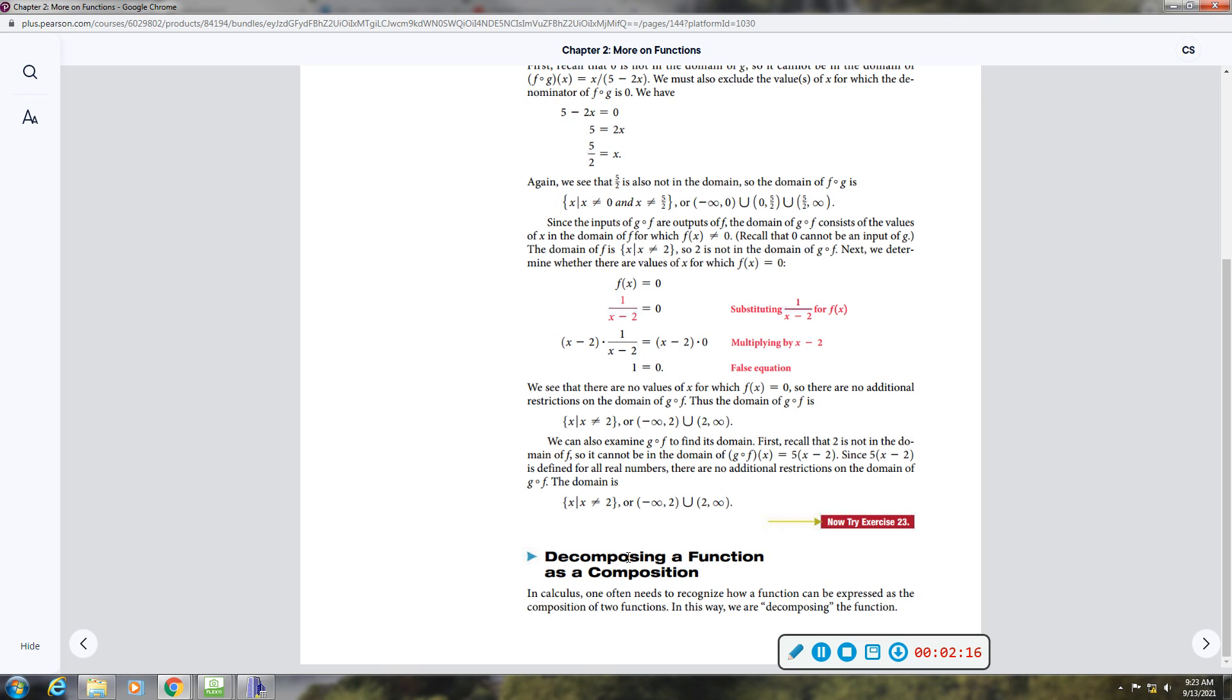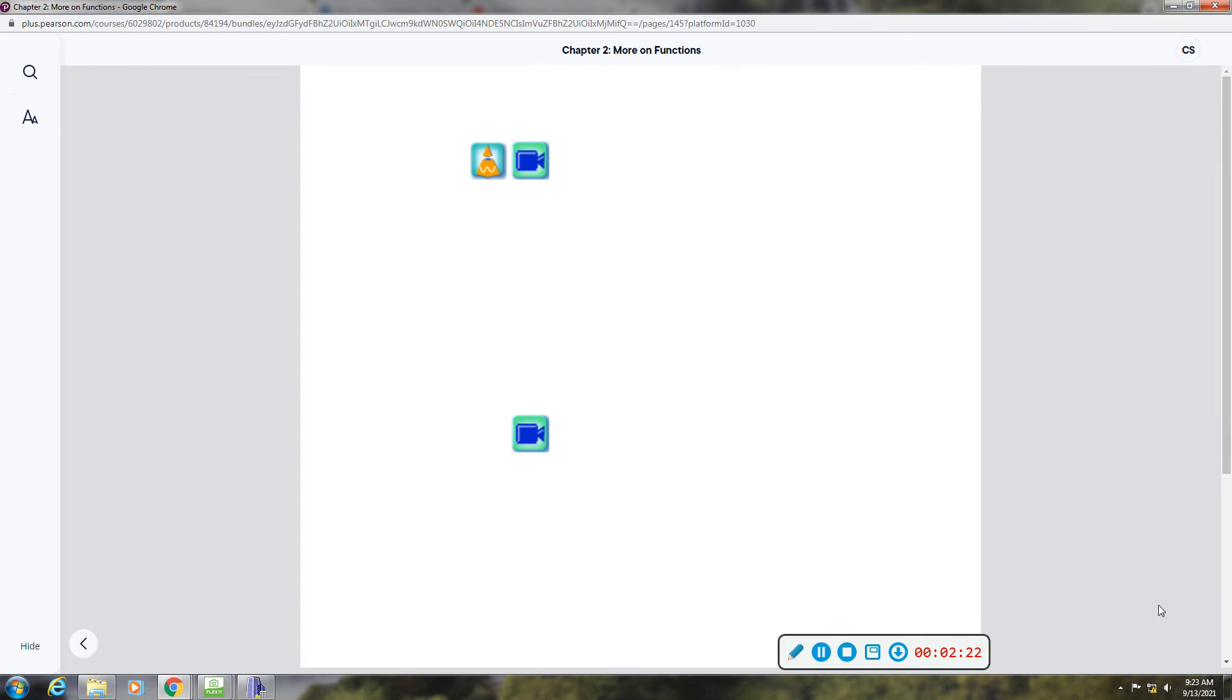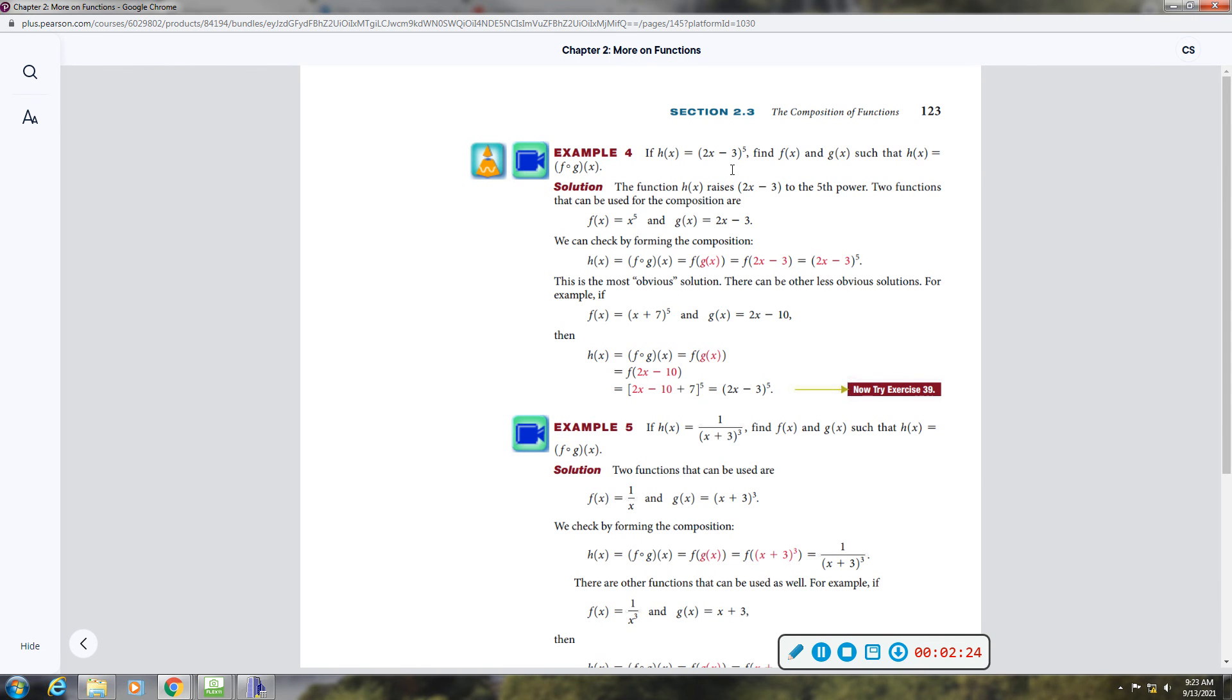So we're also going to go over decomposition of functions. So this is working backwards. Now, when you have a composition and you want to work backwards, there are more than one correct answer. But the simplest way to do it is to think there's an inner function, and then there's an outer function. So the inner function is always going to be what you plugged in. So that would be my G of X, or my second expression.